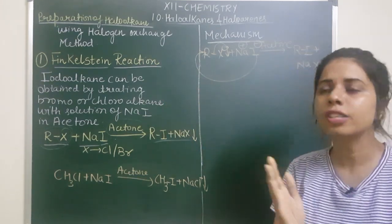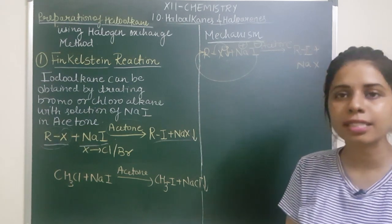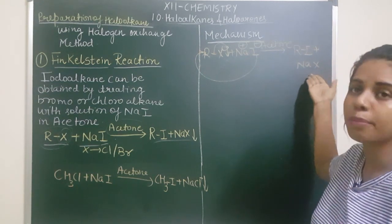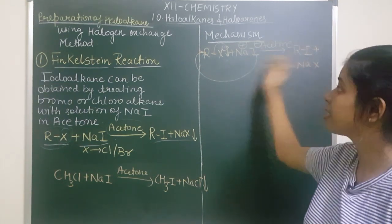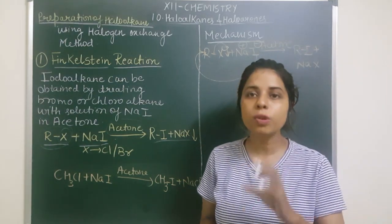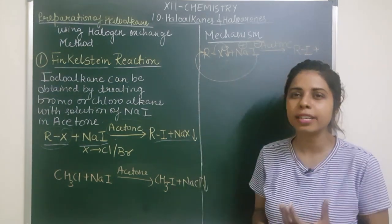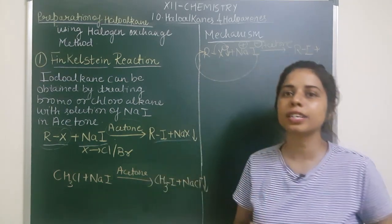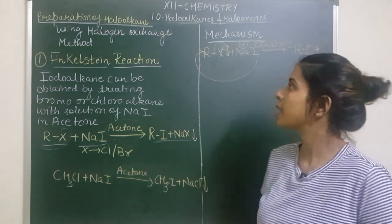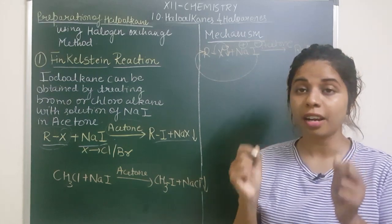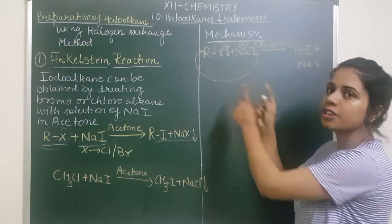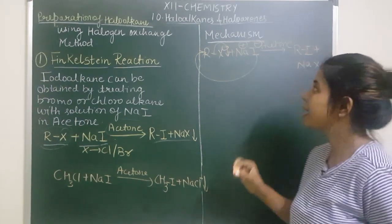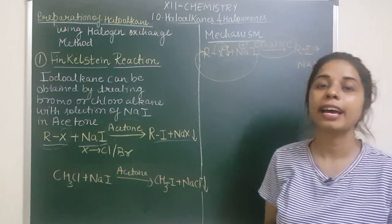The problem is that this reaction can go in the backward direction. The NaX formed — where X can be Cl or Br — means X⁻ can attack back on R and give you the reactant again. That means there are equal chances that the reaction goes in the backward direction. If you are an industrialist, you want to make a product in the required quantity — you do not want the reaction to reverse. So who controls this? The whole game is acetone.